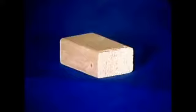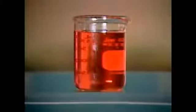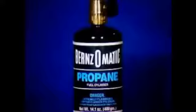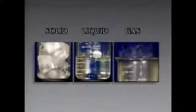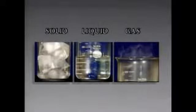Solids have definite shapes and definite volumes. The volume is the amount of space that matter occupies. Liquids have definite volumes, but the shape of a liquid depends on the shape of its container. Gases do not have definite shapes or definite volumes. The shapes and volumes of gases change to match the shapes and volumes of their containers. The terms solid, liquid, and gas refer to the state or phase of a substance. Most substances can exist in any of the three states. For example, water is usually a liquid but it can also exist as a solid in the form of ice, or as a gas in the form of steam.